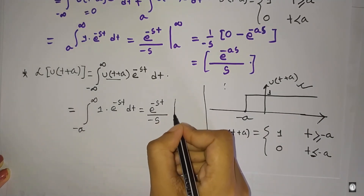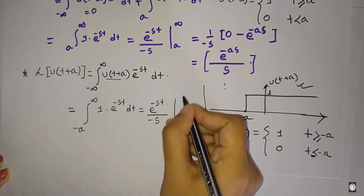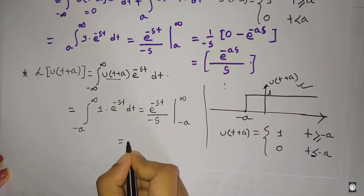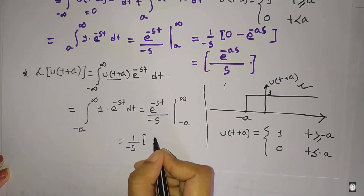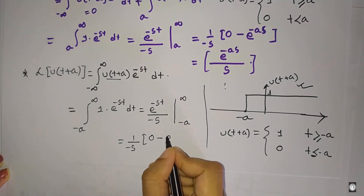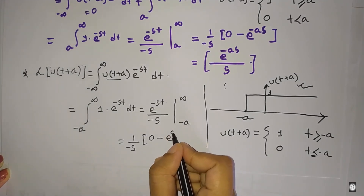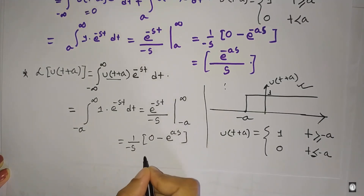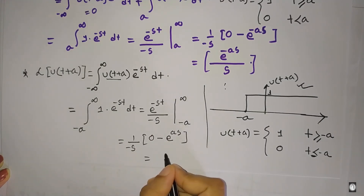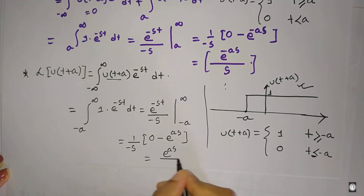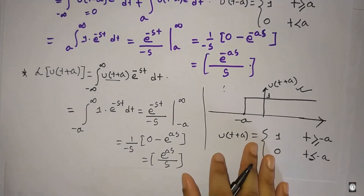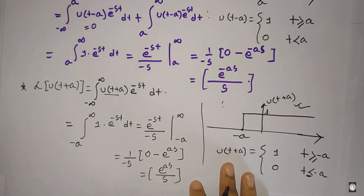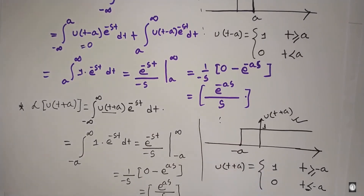Applying the limits: e to the power minus infinity is 0, minus e to the power a times s remains. The result is e to the power as divided by s. So the Laplace transform of u of t plus a equals e to the power as by s. This is the unit step function Laplace transform result.